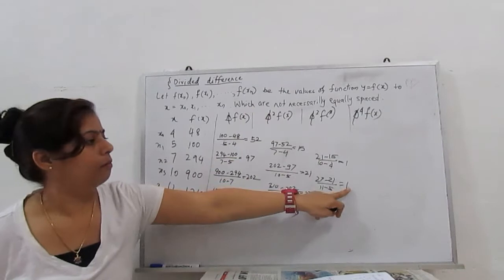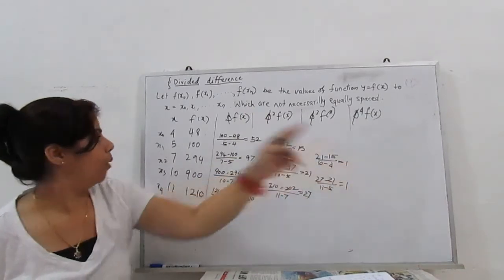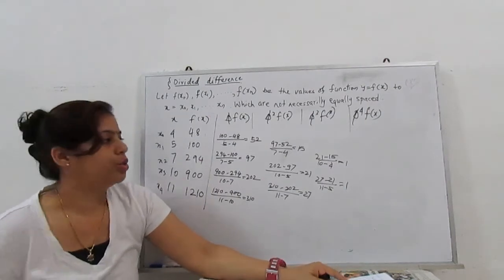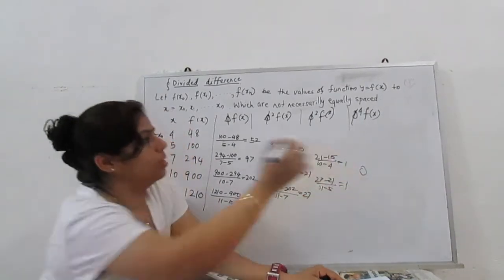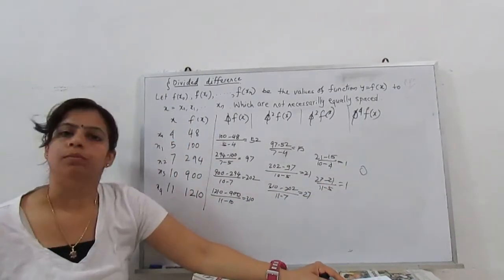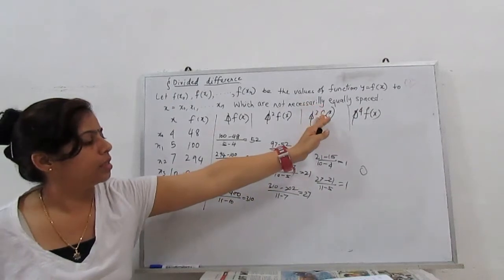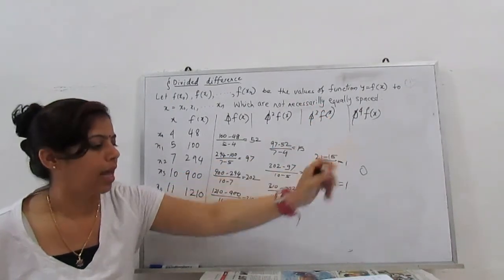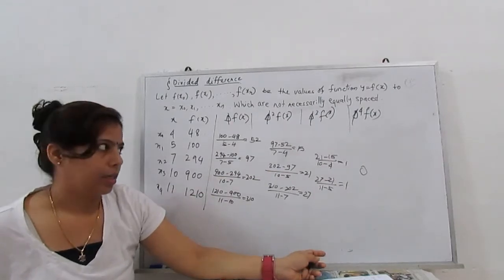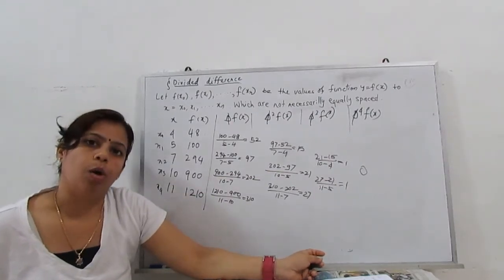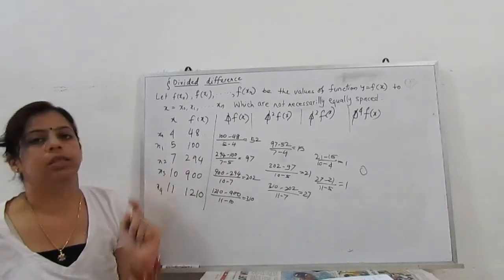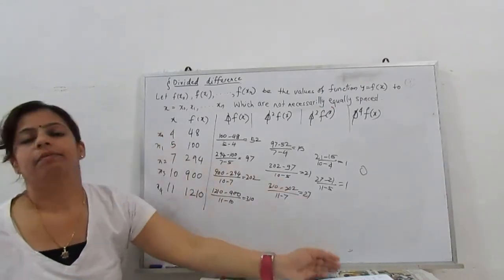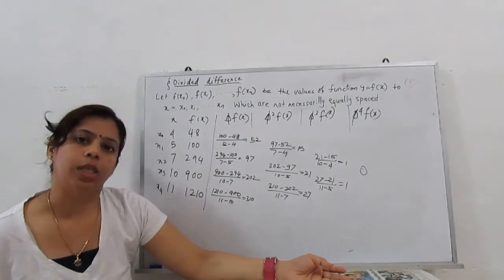Next, for the fourth-order divided difference: (1-1)/(11-4) = 0. So our last divided difference is 0, which means this is a polynomial of degree 3, because beyond that all values go to 0. That is the divided difference and the divided difference table.